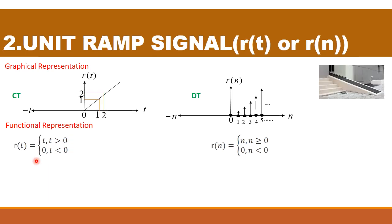The next signal is the unit ramp signal. It is represented as r(t) or r(n). Ramp means it is a slope — as shown in the figure, we get a linear graph. If t = 1 then r(t) = 1; if t = 2 then r(t) = 2, and so on. So r(t) = t for t ≥ 0, and r(t) = 0 for t < 0. Similarly for discrete time: r(n) = n for n ≥ 0, and r(n) = 0 for n < 0.